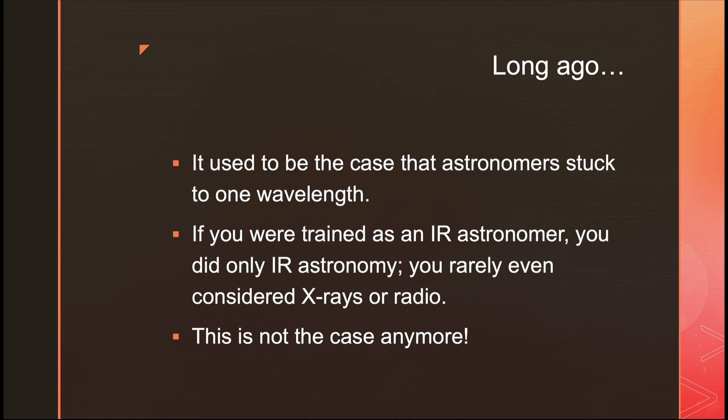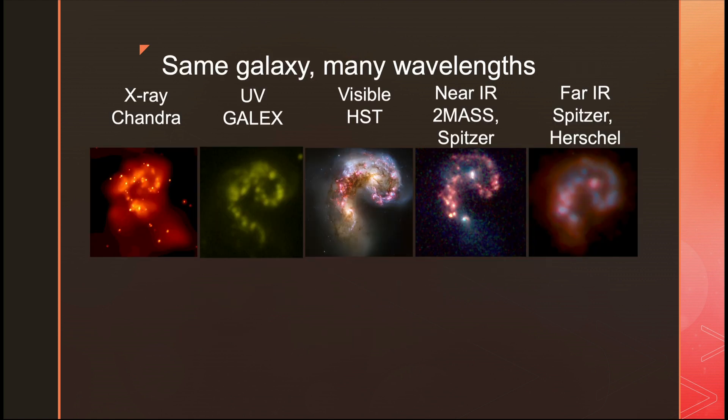We have to use all kinds of light from these objects. At this point we're also doing multi-messenger astrophysics — getting things like gravitational waves and neutrinos — but in the context of this talk I'm just going to be talking about electromagnetic radiation: all the different kinds of light we get from astronomical objects.